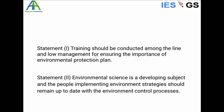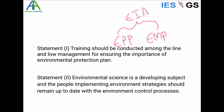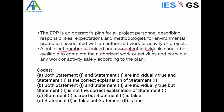Next question: Statement one — training should be conducted among line and law management for ensuring the importance of the Environmental Protection Plan. Statement two — environmental science is a developing subject and people implementing environment strategy should remain up to date with the environmental control process. The Environmental Protection Plan is part of EIA, and the project gets environmental clearance based on this plan. Both statements are true, so we should choose between A or B.